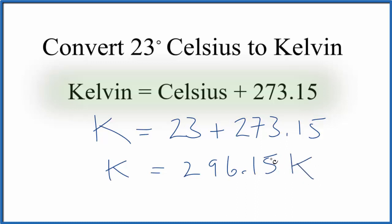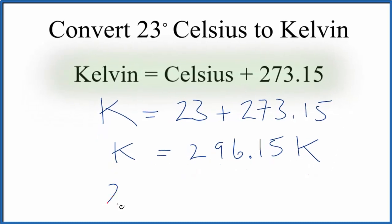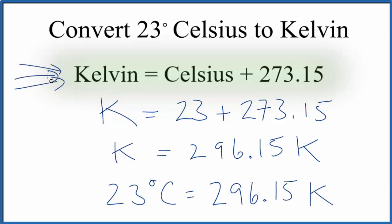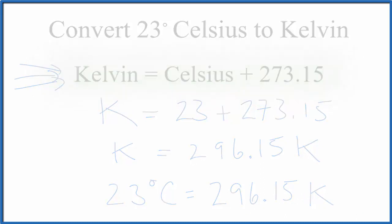So we can say that 23 degrees Celsius equals 296.15 K. Again, this is a really useful little equation to know when you're doing conversions from Celsius to Kelvin and back. This is Dr. B — thanks for watching.